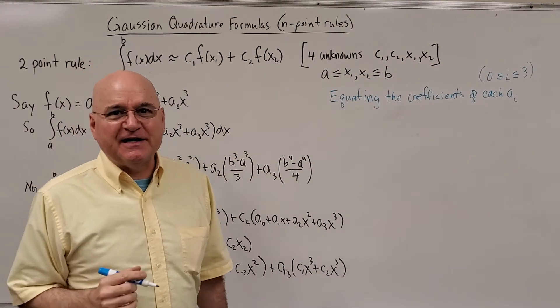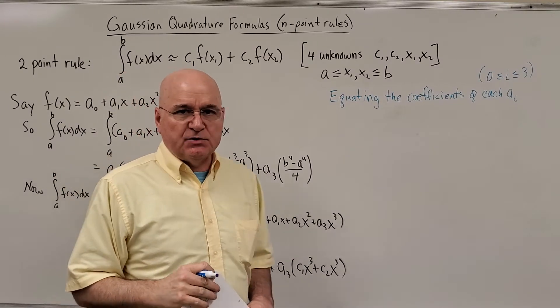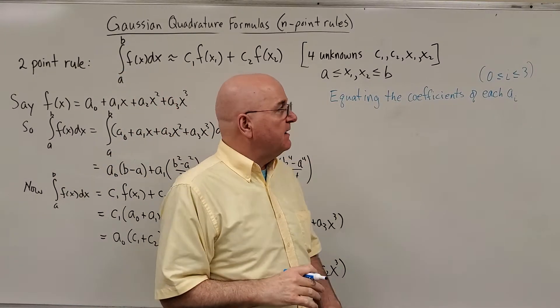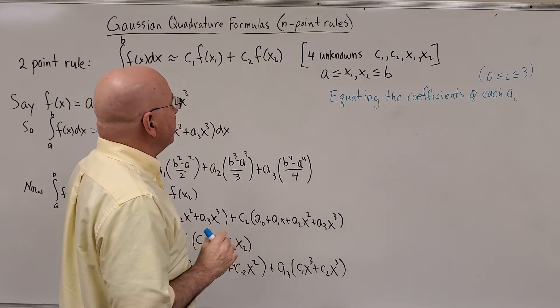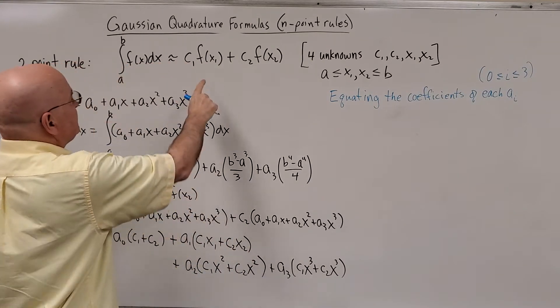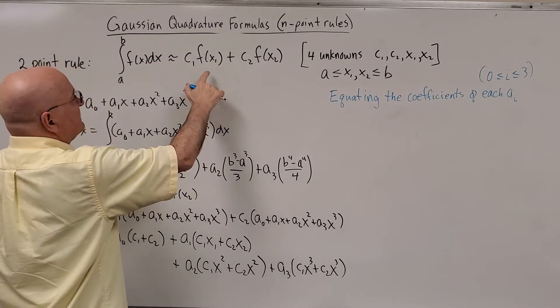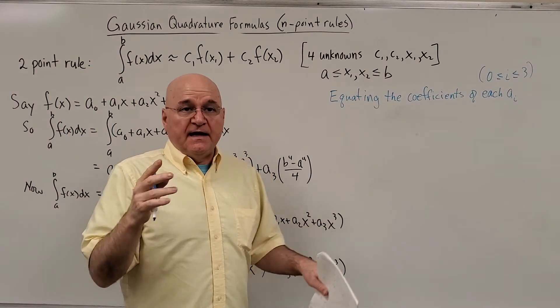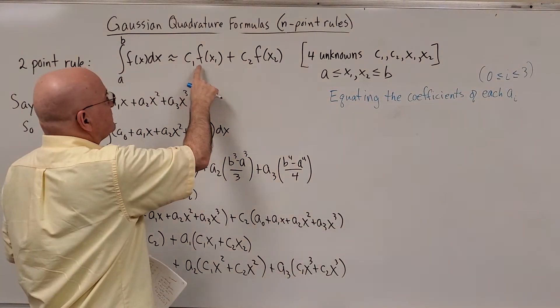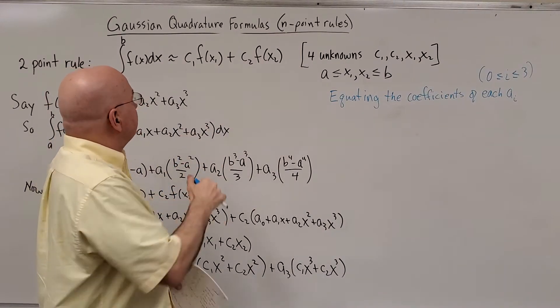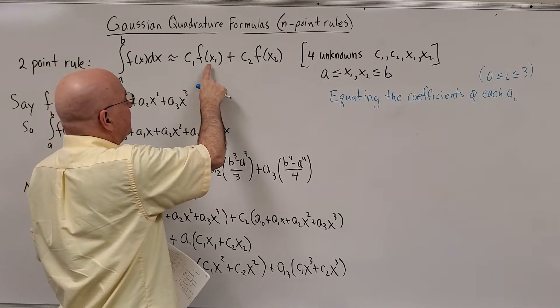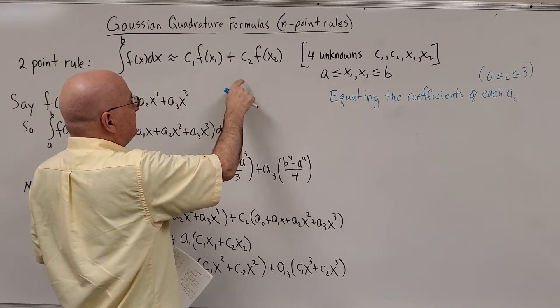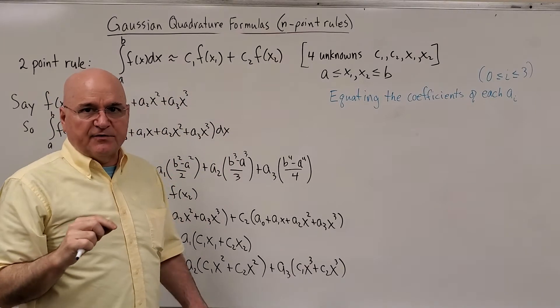Okay, we're going to do one more derivation. We're going to derive the Gaussian two-point rule. I've got most of it on the board already, but the two-point rule means you're going to take two points in between A and B, and you're going to use some weight values, C1 and C2, and that C1 times F of X1 plus C2 times F of X2 is your estimate for the integral.